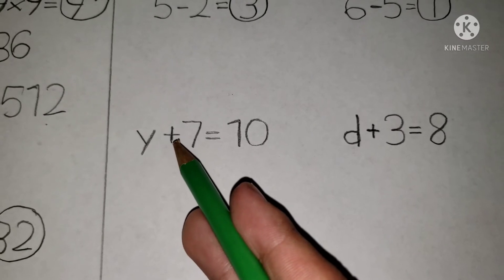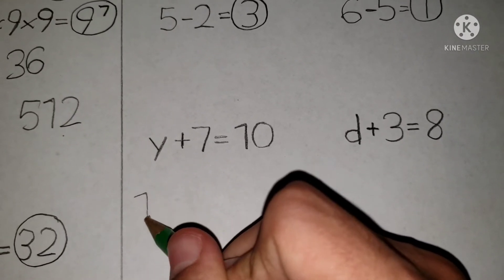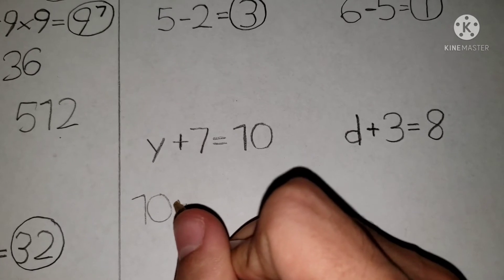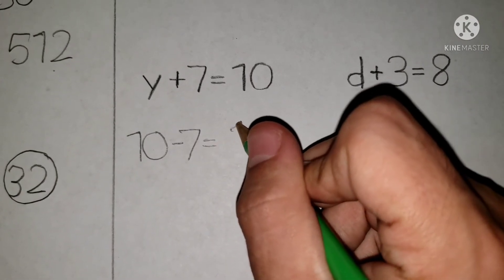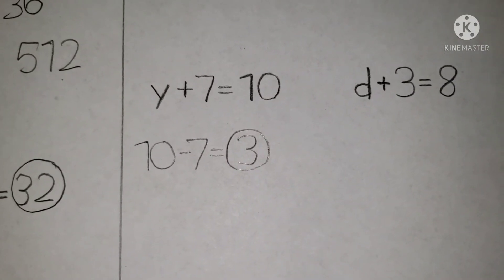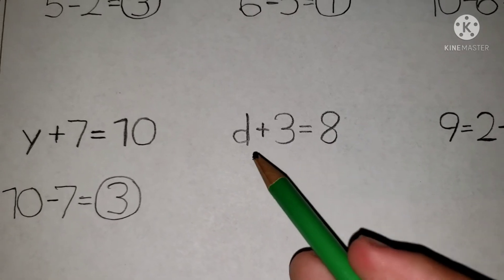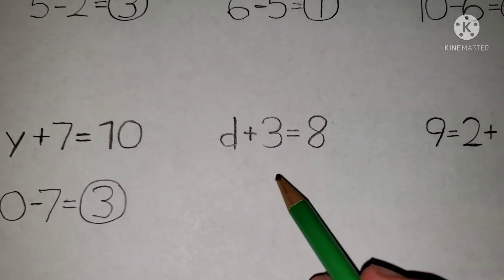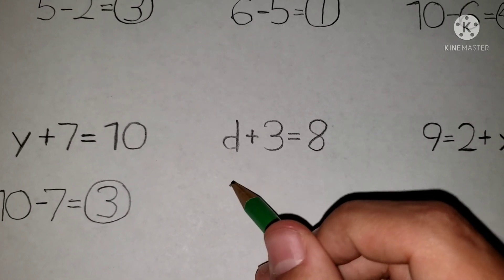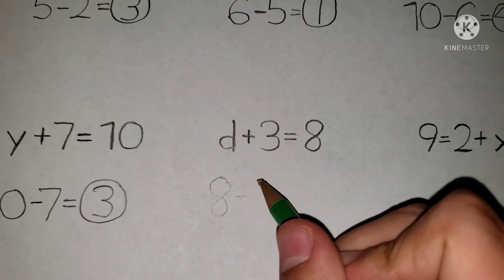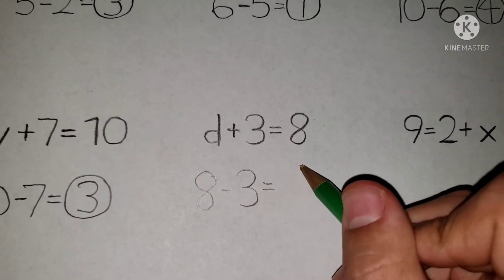Next, y plus seven equals ten. You have the plus here — like I said, the plus you make it negative. So it'd be ten minus seven. What's the final answer? Three — and there you go, guys. Next, d plus three equals eight. Like I said, the positive you make it negative to get the final answer, so it'd be eight minus three. And the answer is five.